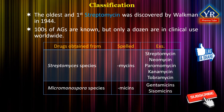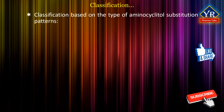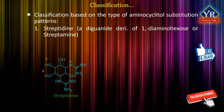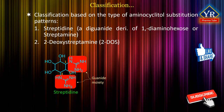A smaller but equally important group are obtained from Micromonospora species. The gentamicins and sisomycins are in this category. A chemical method of categorizing the aminoglycosides is on the basis of the type of aminocyclitol substitution patterns. There are two aminocyclitols encountered: number one, streptidine, which is a diguanidine derivative of 1,3-diaminohexose or streptamine, and number two, 2-deoxystreptamine, abbreviated 2-DOS.